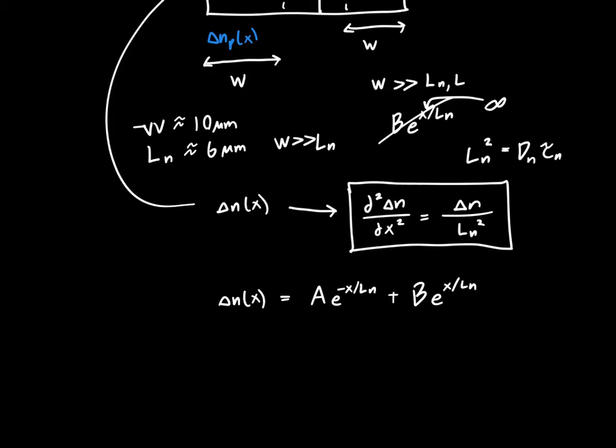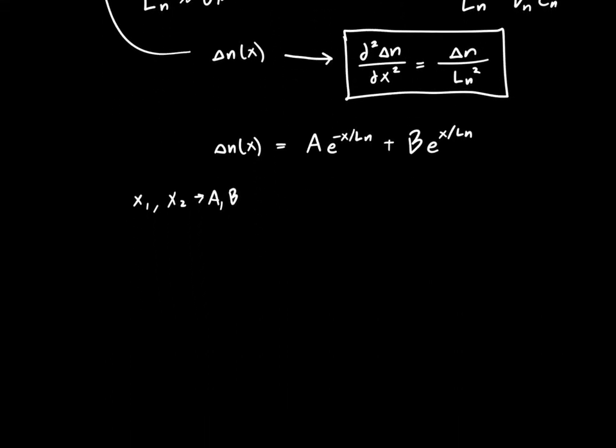And now to actually solve this, we need to generate two equations from this differential equation. So we need to plug in two different values of x. So x1, x2, they can be whatever we want in order to find a and b. And so we need two locations of x where we know the concentration. That's all that applying boundary conditions is. Generally, we know what the concentration should be at the boundaries.